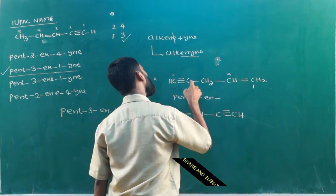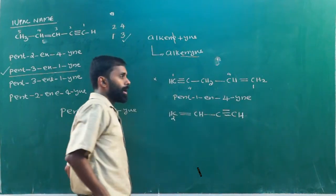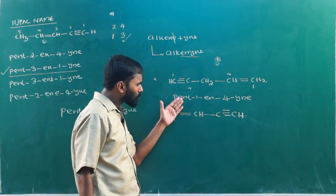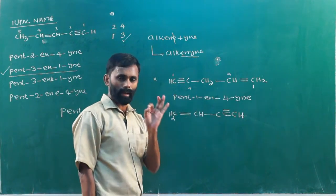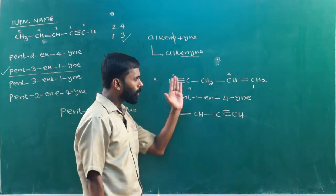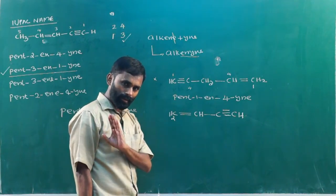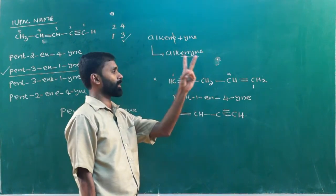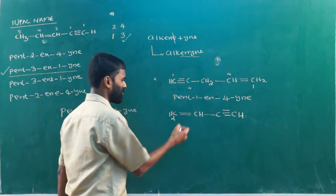One, two, three, four, five. Pent, one-en, four, five. If you have a question involving double bond and triple bond, you should consider double bond preference. If you have both double bond and triple bond, you have a left leg number and a right leg number. Two combinations may be the same — that is double bond preference. Same example: double bond, triple bond, the numbering gives one, two — one, two — that's double bond preference.